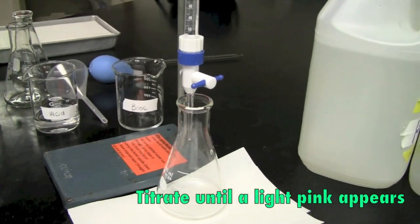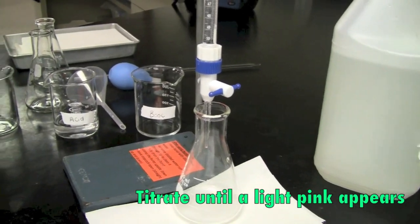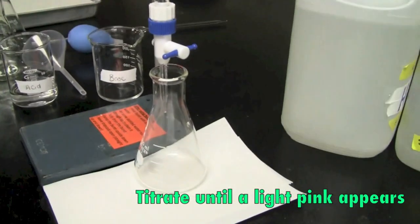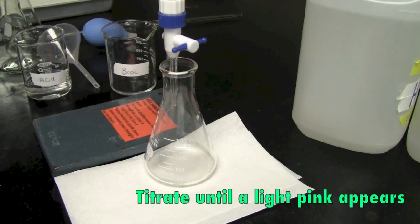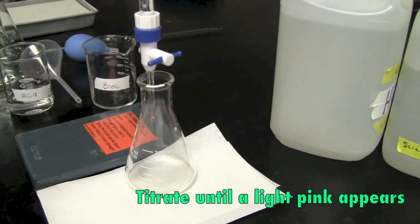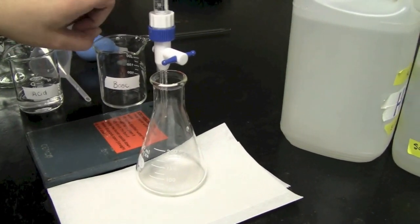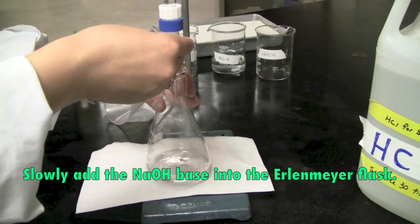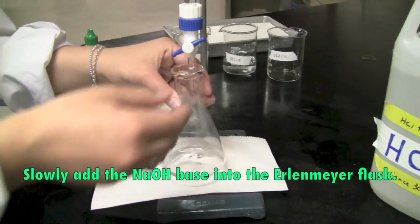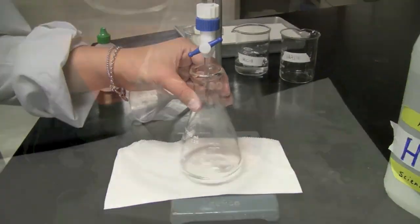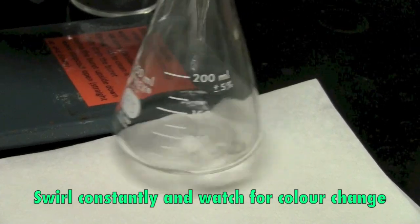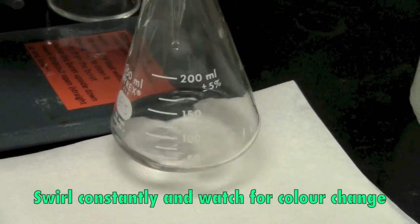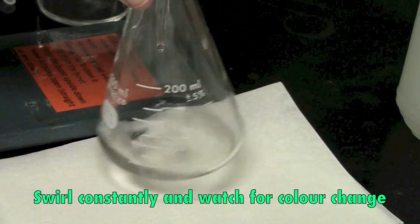So what we're going to do is we're going to titrate until the solution is permanently light pink. So this is going to happen when you add the base into the acid. So remember, when we're adding base into the acid, this is neutralization.